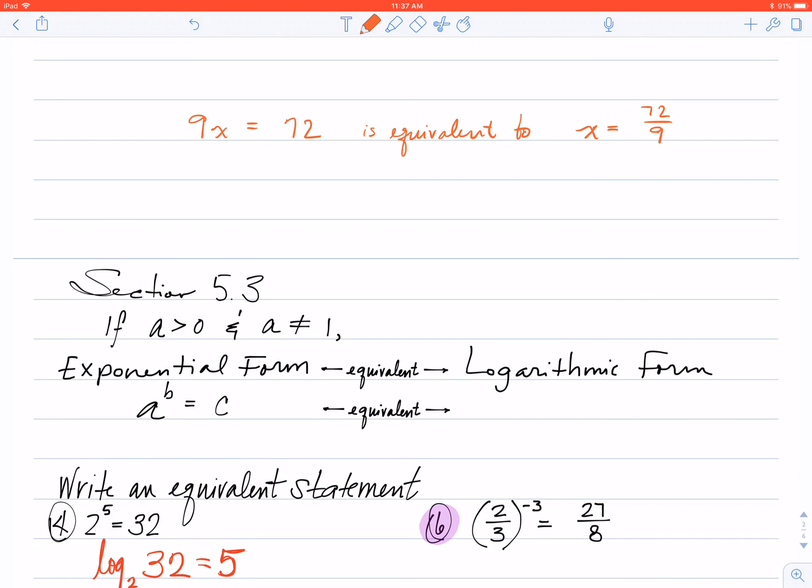If I go back up here and look at this statement, 9x equals 72, I understand that this is a multiplying statement, and we know that multiplying is undone - the undo button is division. So this is the exact same statement as x equals 72 divided by 9.